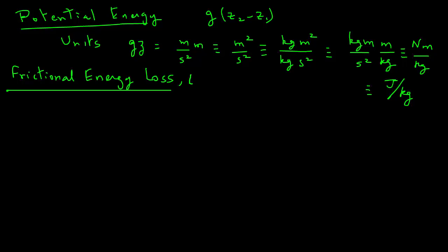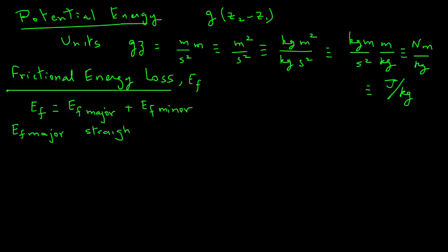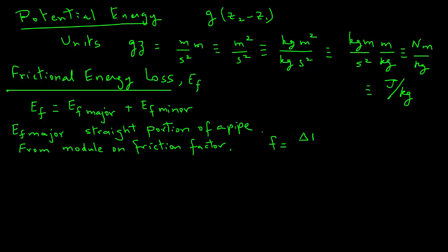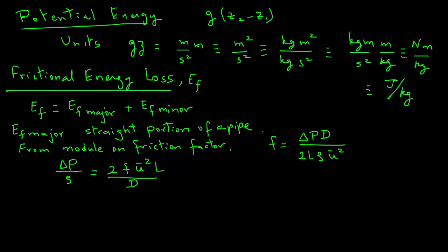The frictional energy loss EF is made up of two parts: EF-major for major losses and EF-minor for minor losses. EF-major applies to the straight portions of a pipe. From our development of the friction factor, we had: f equals delta P times D divided by 2L rho u squared. Rearranging gives: delta P over rho equals 2f u squared times L divided by D. So EF-major losses can be calculated from the friction factor, the velocity, the pipe length, and the pipe diameter.